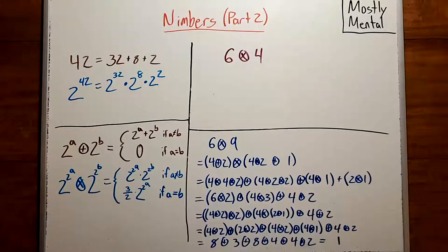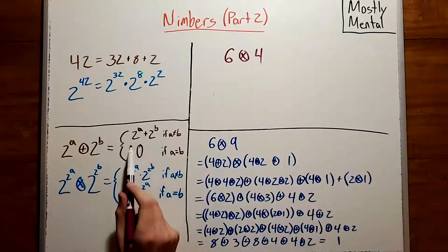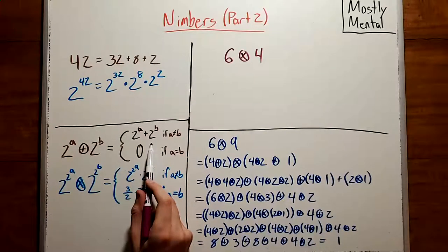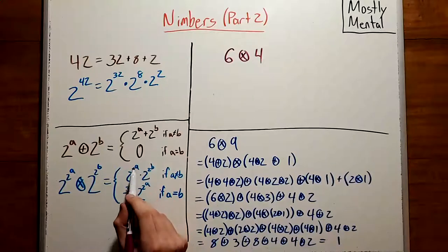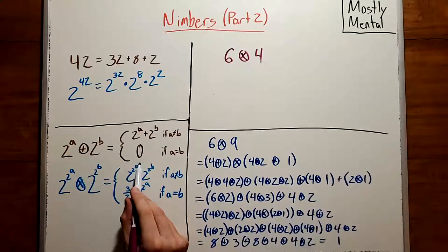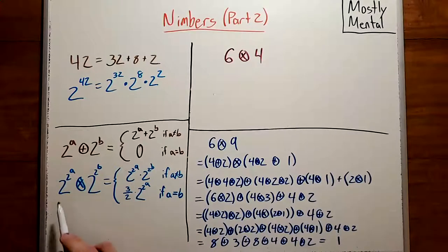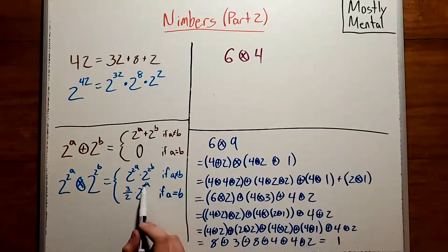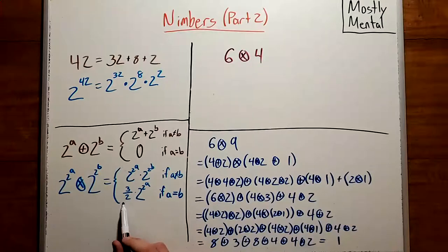When we add different powers of 2, we get the same result, whether we're using nim addition or regular addition. The only difference is that with nim addition, adding a power of 2 to itself gives us 0. And similarly, when we multiply different Fermat 2 powers, we get the same result with nim multiplication and regular multiplication. The difference is that nim multiplying a 2 power by itself gives us 3 halves times that 2 power.